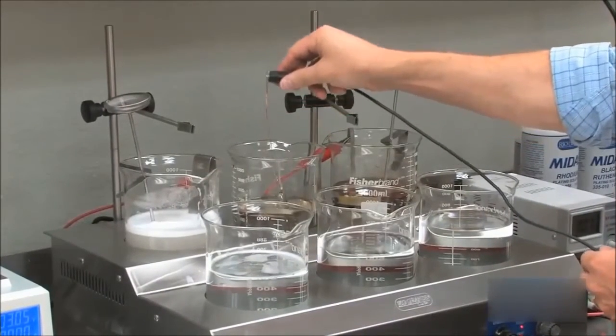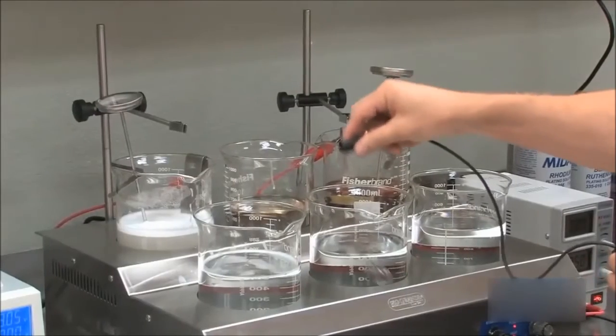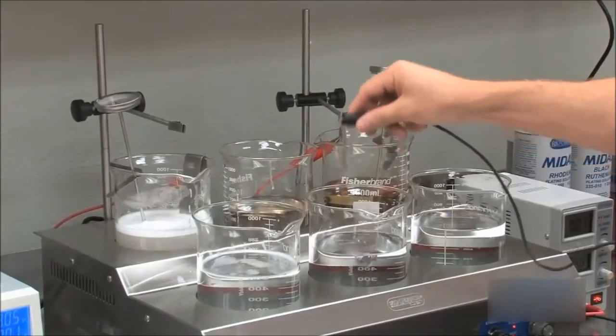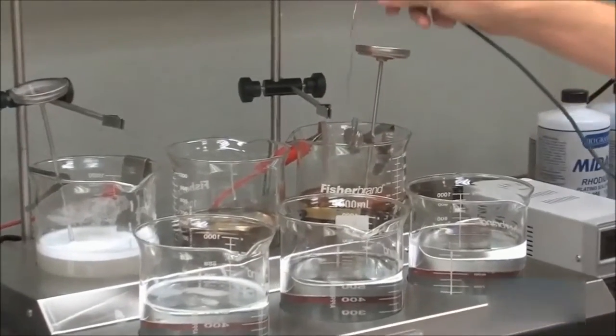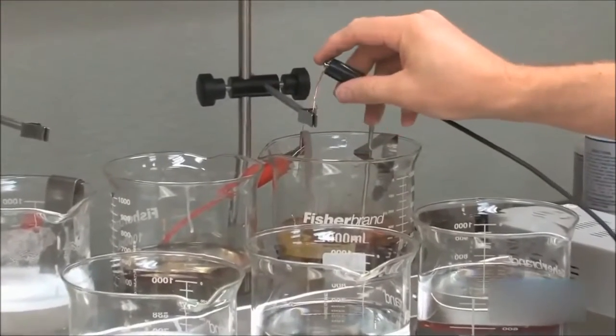You can also preplate a Sterling piece with gold or palladium. Instructions for both can be found in the Midas Plating Guide book. Gold pieces do not need a barrier layer and can be rhodium plated directly after activation.